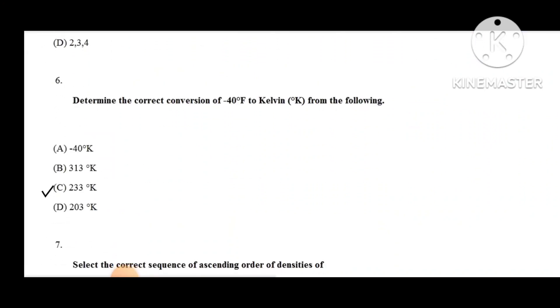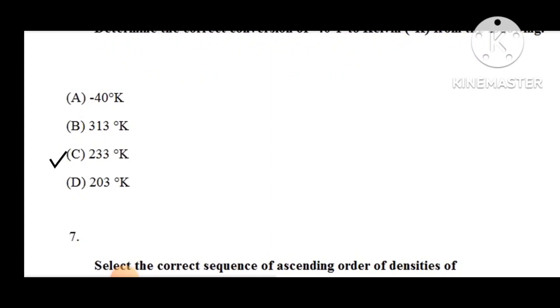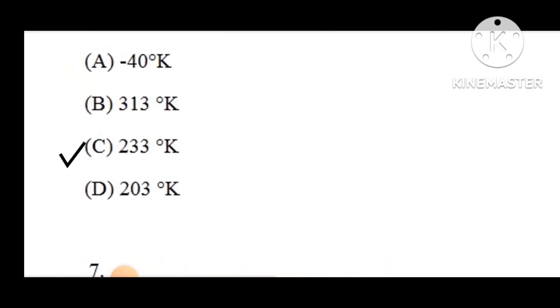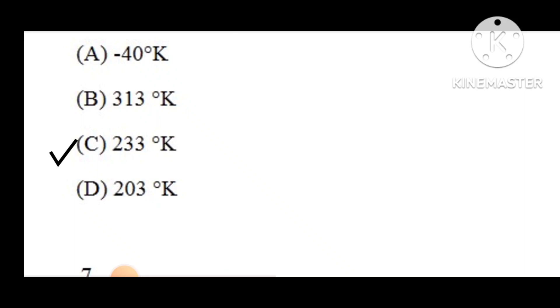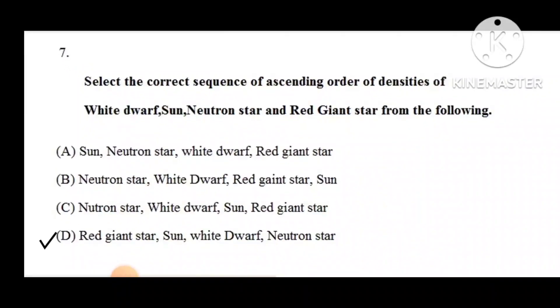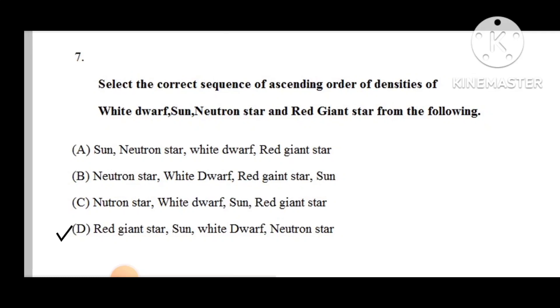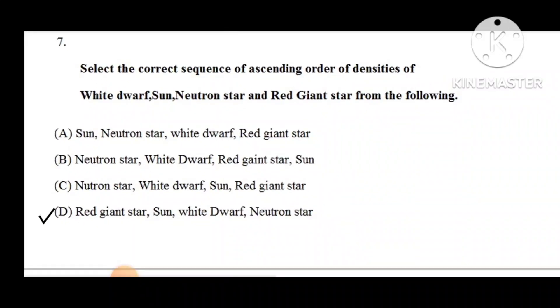Question number 6: Determine the correct conversion of minus 40 degrees Fahrenheit to Kelvin from the following. Options: minus 40 K, 330 K, 230 K, and 233 K. The correct option is 233 K.